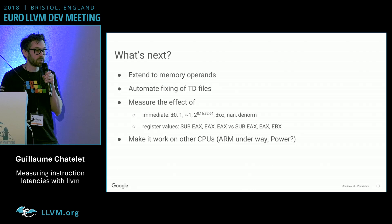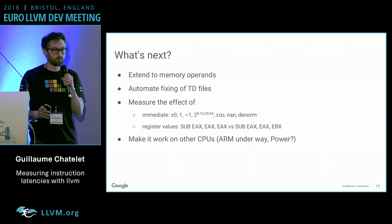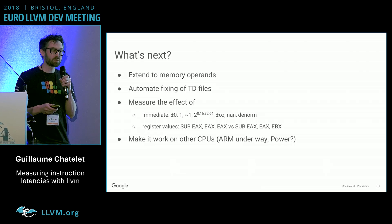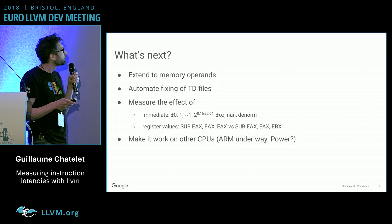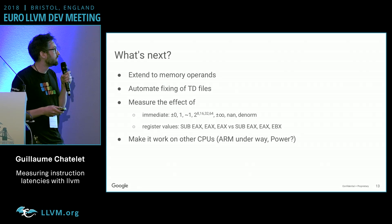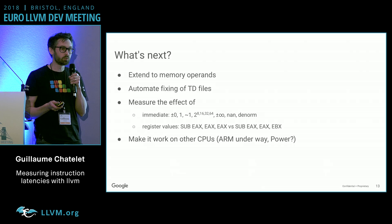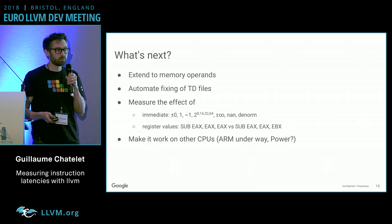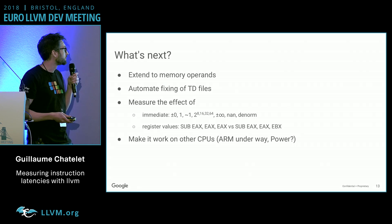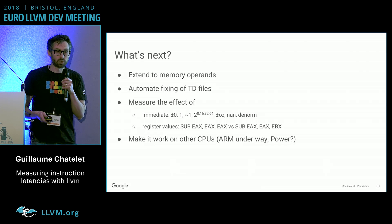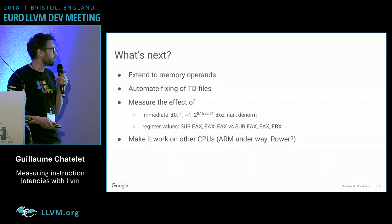What's next? Right now we only deal with registers — we don't deal with memory, and that's something we want to do since it covers roughly half of the instructions. We also want to automate, or at least help, fixing the TD files by pointing out where the errors are. We want to measure the effect of immediate values — for instance, if you have instructions dealing with floating points and you have denormal values, NaNs, or infinities, will that impact the latency? And we want to make it work on other CPUs: ARM is underway, and we'll be working on Power next.